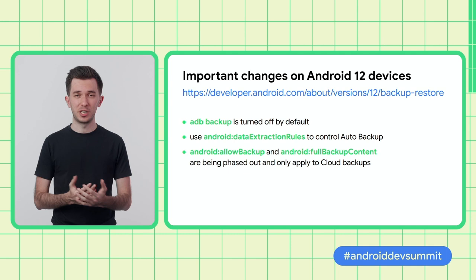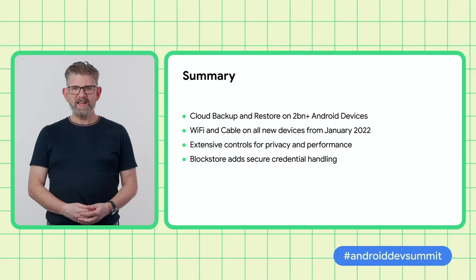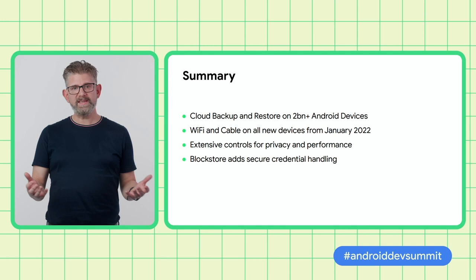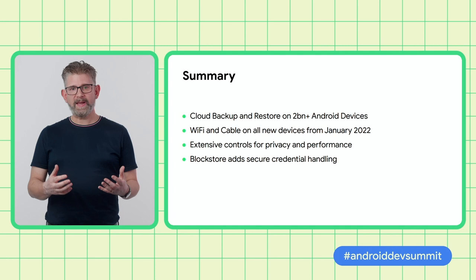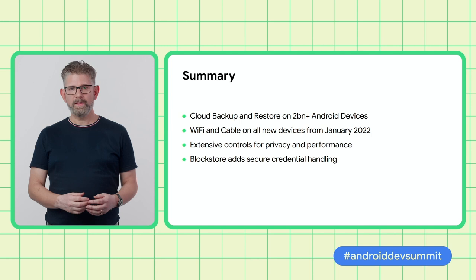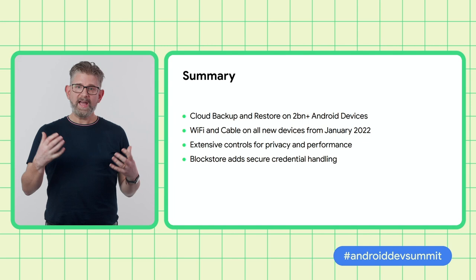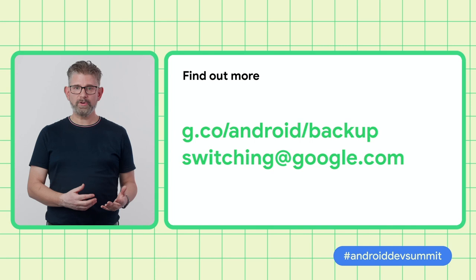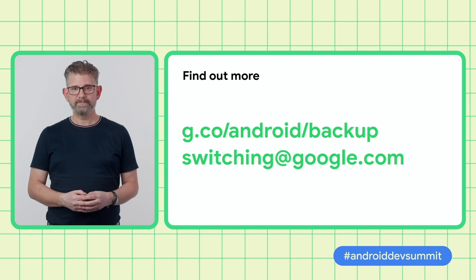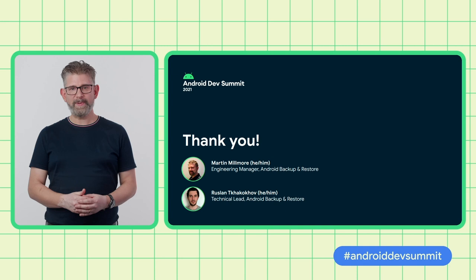And now I would like to hand it back over to Martin. Thanks, Ruslan. I'm sure you're excited to make sure your app data can transfer over to a new device. The good news is that backup to the cloud is available for free on over 2 billion Android devices today. Wi-Fi and cable transfers are expanding to be on every new Android device from January 2022. All of this works by default — we'd encourage you to make sure it's turned on and fine-tune what gets exported if you have large or sensitive data. Don't forget the new BlockStore API to allow you to handle passwords securely. You can find out more at g.co/android/backup and contact us at switching@google.com. Thank you for your time today — I hope you found this useful and will take advantage of Backup and Restore to give your users an even better experience.